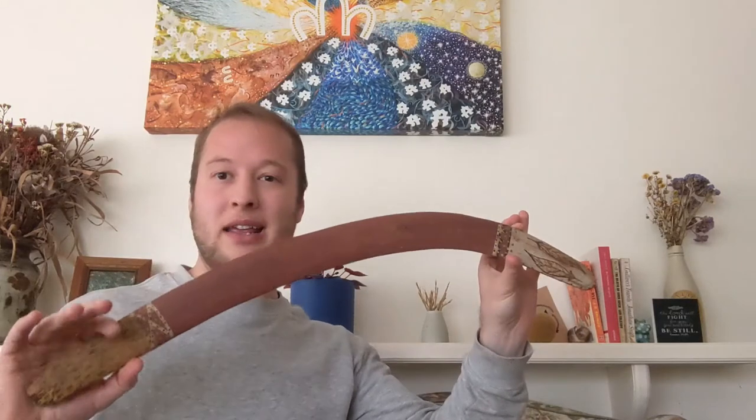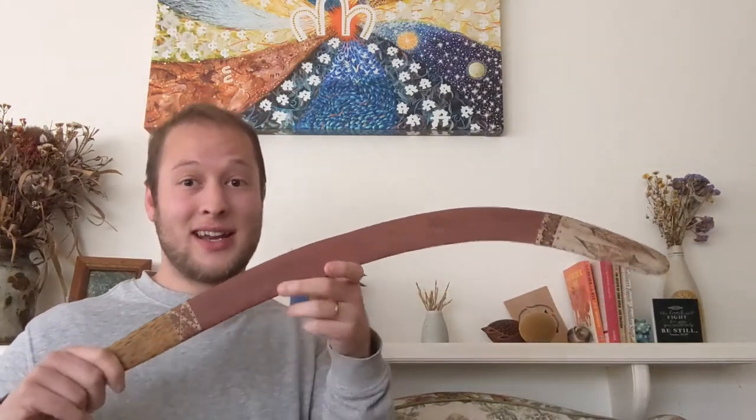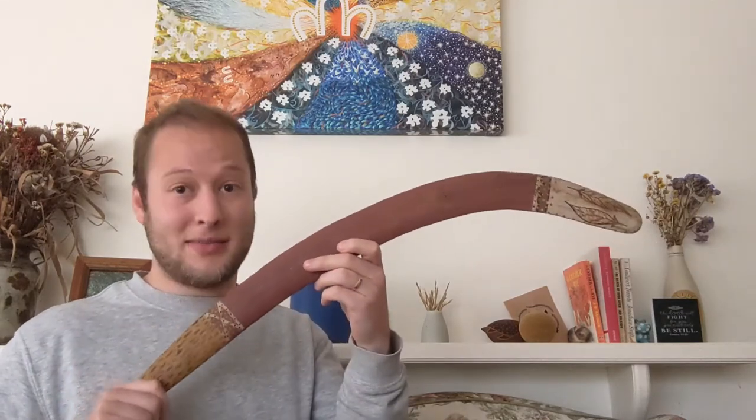Whereas the ones that are U-shaped are more for scaring birds and making smaller animals run towards the person that might have a spear or something that might be a little bit more deadly. As far as I'm aware, a boomerang isn't normally used to do the final blow, it's normally used to make the animal move to where you want it to go. It's really great ideas from very ingenious indigenous people many many years ago.